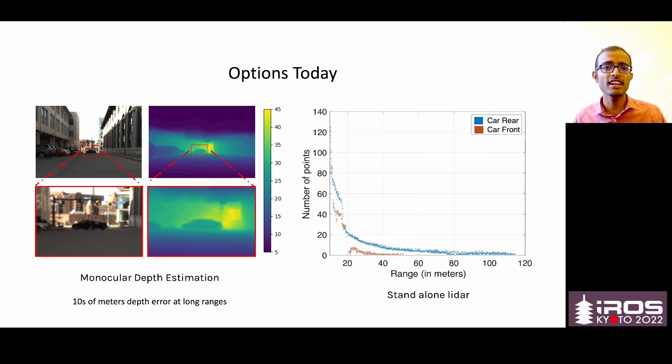Another option could be LIDAR. While LIDAR is accurate, the performance of LIDAR is very much dependent on the object reflectivity, object orientation, and ambient sunlight. Here, you can see that the front of the car without a license plate stops being detected at very short ranges compared to the rear of the car with the license plate.